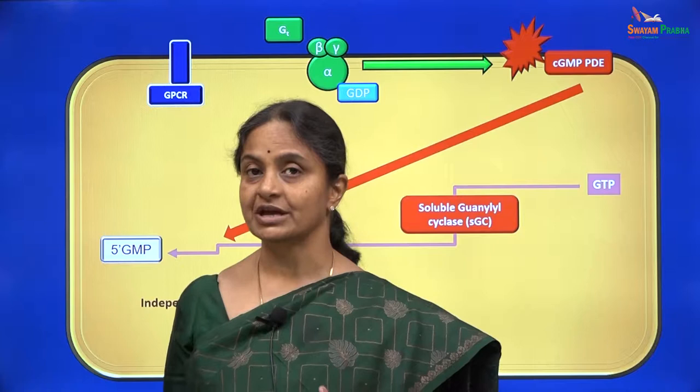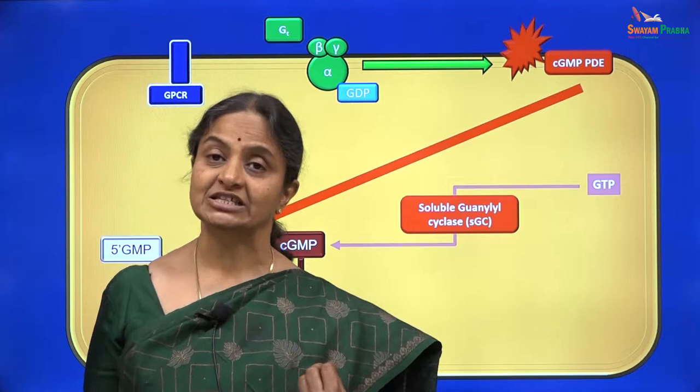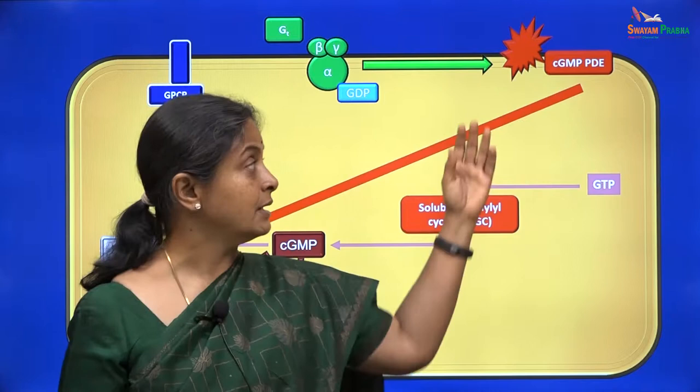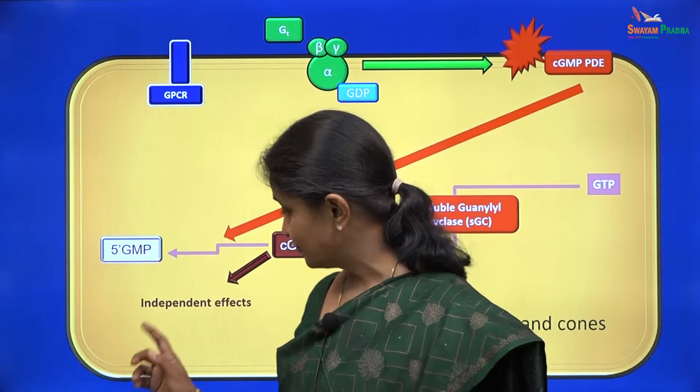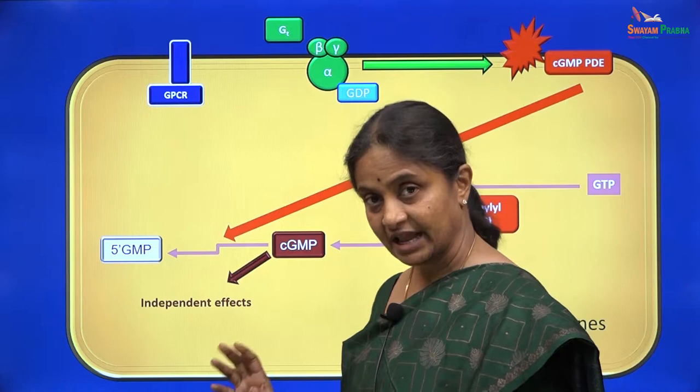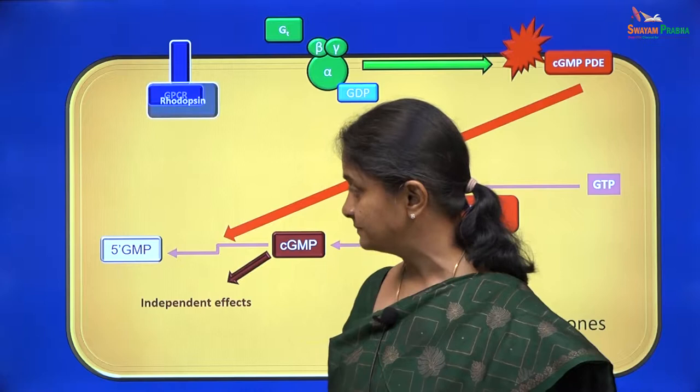The best known functions of cyclic GMP are in the rods and cones, and in the vascular smooth muscle. In the rods and cones, cGMP levels are modulated by the G protein coupled mechanism, and that is what we will see first. In rods and cones, the actions of cGMP that we will discuss are independent of protein kinase G.